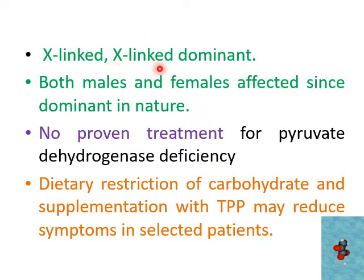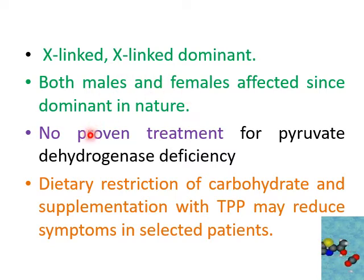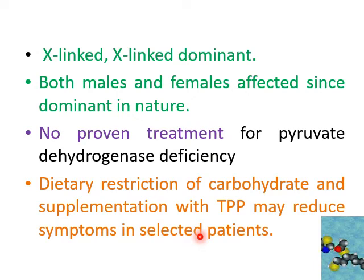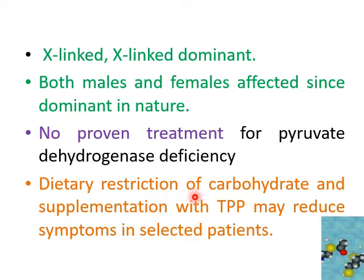This disease is autosomal dominant and can affect both males and females. To date, there is no proven treatment for this deficiency, but in selected patients, dietary restriction of carbohydrates and supplementation with thiamine pyrophosphate (TPP) may improve symptoms.